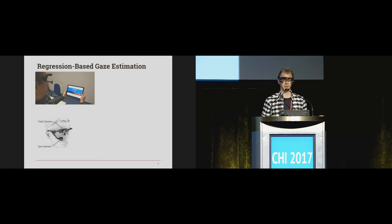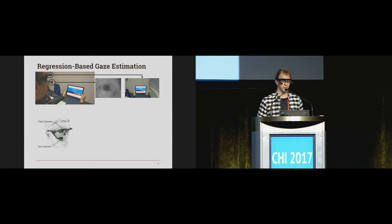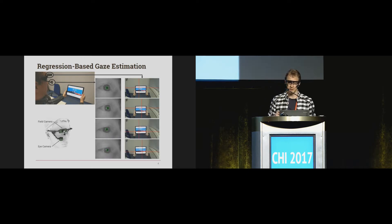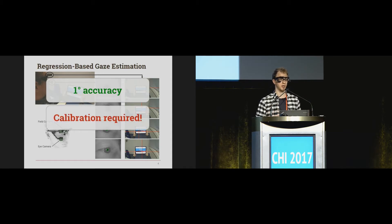The way we try to figure out where the user is looking is by doing a gaze estimation — in this case, regression-based. You get an image of the eye and an image of the field. You detect a feature in the eye image, usually the pupil, and then you map that pupil position to a gaze position in the field image. Naturally, different pupil positions will yield different gaze positions. With this, you can get pretty good accuracy, but the catch is it requires a calibration process to create the function that maps the pupil position to the gaze position.